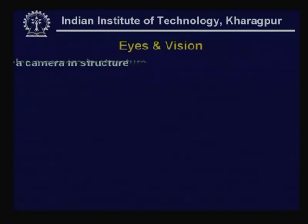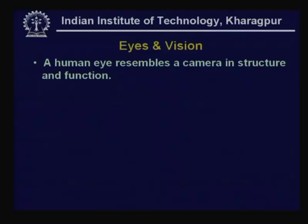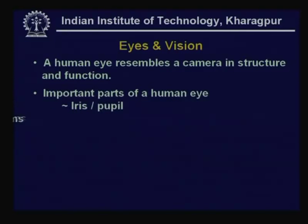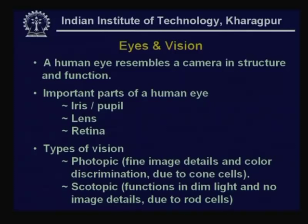The next lesson dealt with the eyes and their behaviour with vision. The human eye resembles a camera in structure and function. It has three important parts: the iris or pupil which allows light in, similar to the shutter opening; a lens similar to a camera lens; and the retina which corresponds to the film. We have two basic categories of vision: photopic, which gives fine image details and colour discrimination due to cone cells, and scotopic, which helps us see in dim light and is due to rod cells.